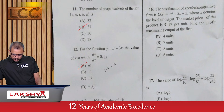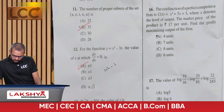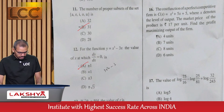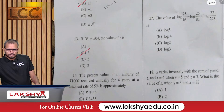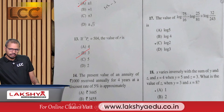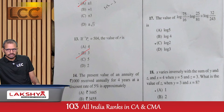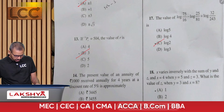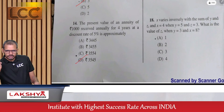Question 16: The cost function for a perfectly competitive firm is C(x) = x² + 5x + 5, where x is the output level and the market price is ₹17 per unit. Find the profit-maximizing output — option D. Question 17: The value of log(75/16) - log(25/81) + log(32/243) — option C.